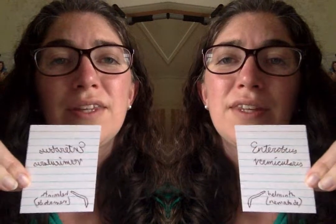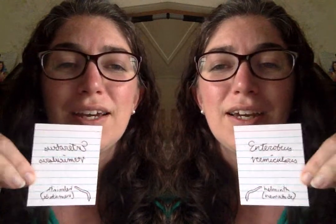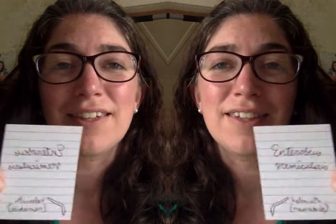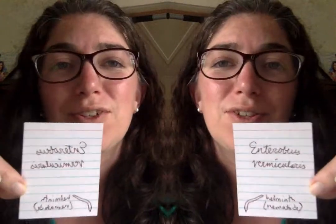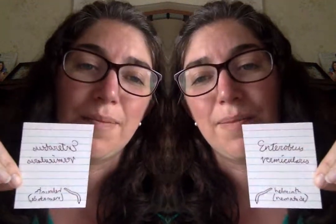Another important worm is Enterobius vermicularis — that's pinworm, one you may have actually experienced in the U.S. It doesn't really cause many symptoms; the biggest symptom is an itchy butthole because it lays its eggs around the anus. Usually it's children that transmit the disease — they scratch their butt, put their hands in their mouth or on toys, and other kids touch those toys. It gets transmitted quickly through daycares. Kids playing outside in dirt or sand can also pick it up. It's not a serious infection, not a serious pathology, and is easy to treat with an antihelminthic.